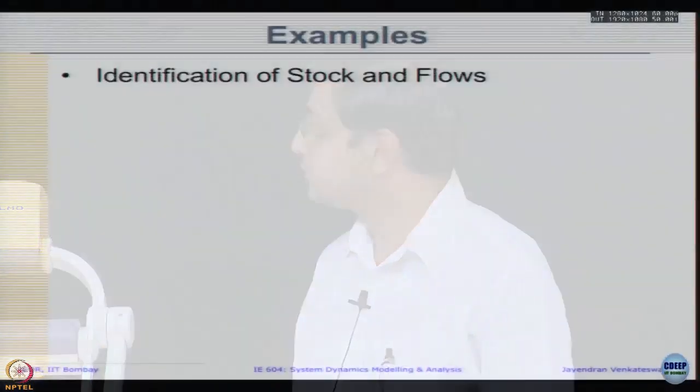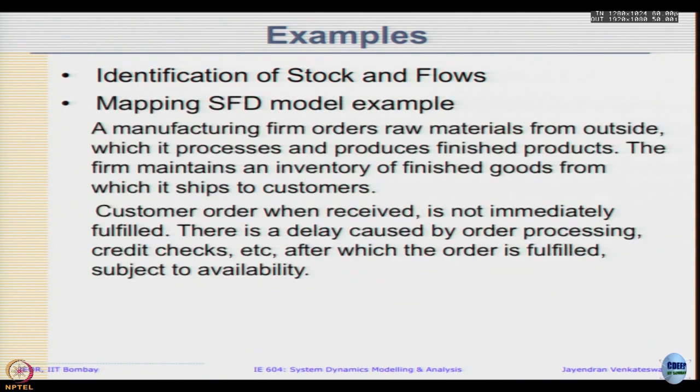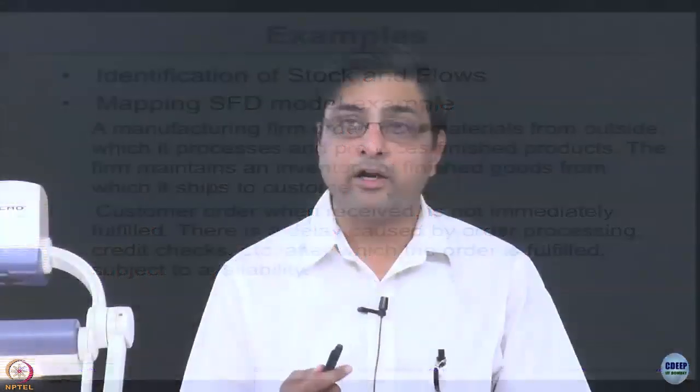That is the agenda for today's class first part. Let us move on to the examples. We looked at few examples last class to identify stocks and flows. Today we will begin with an example of just mapping the stock flow diagrammatic representation of a model. The description, using the same description you can model a causal loop diagram, we have seen some examples of that last week. But we can go one step further and start to identify what are the stocks and flows within the same based on the same description.